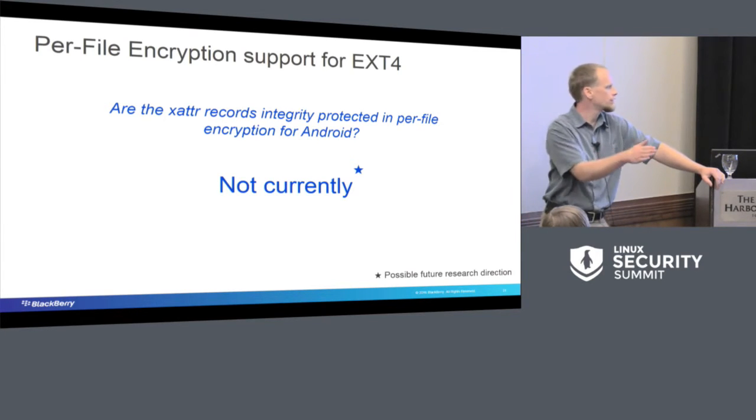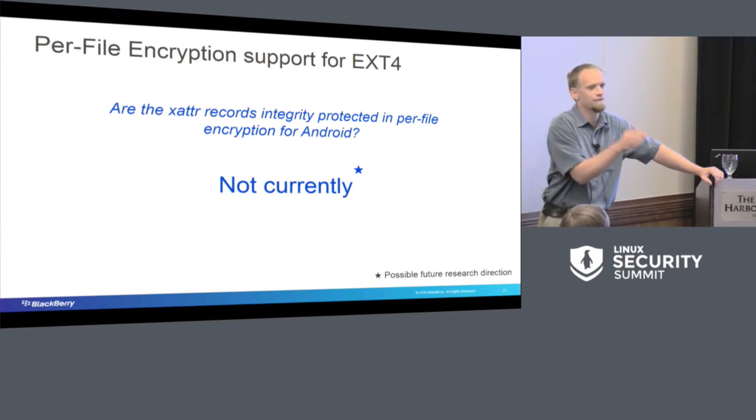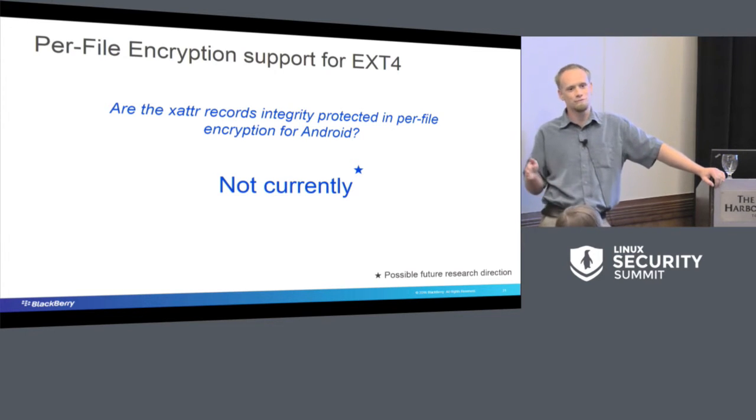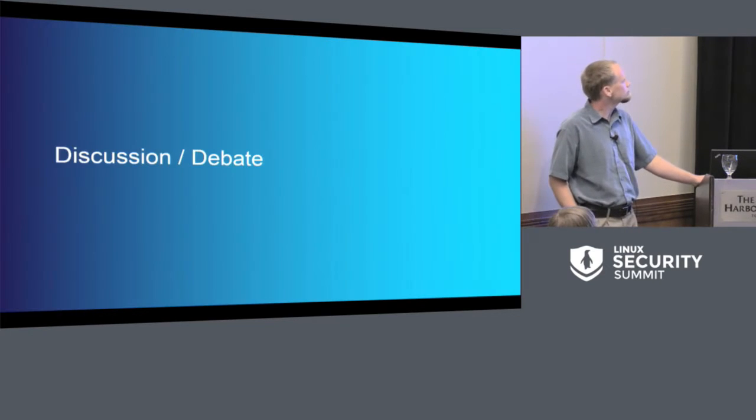You can change the permissions on it and then just reboot the system. If you change the permissions on it and reboot the system and you also have code running on that system, then you can start to read the file. Because the kernel will helpfully decrypt it for you. Now, extended attribute records, they are a possible future thing. Just like I said, path trust was version one. ext4 per file encryption support is not finished, I'm sure. There's probably more patches coming for it.